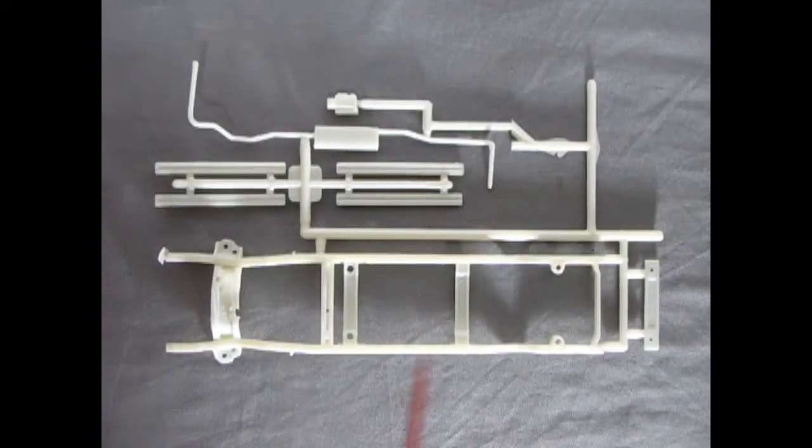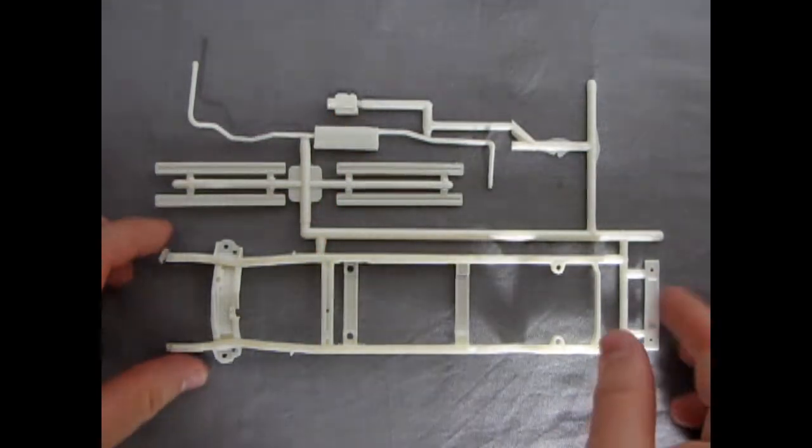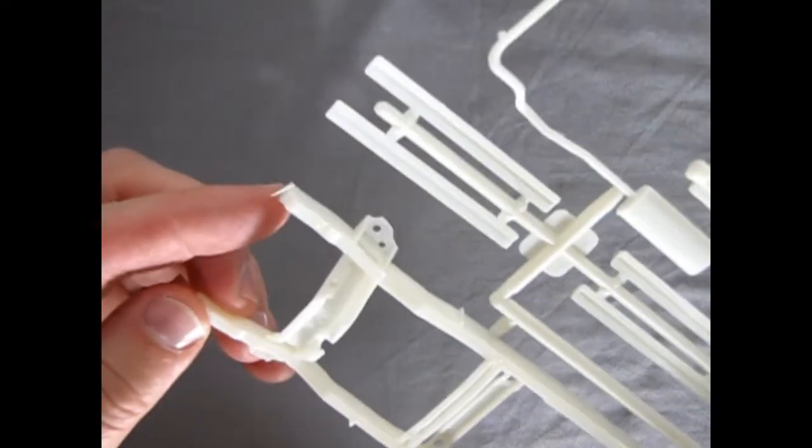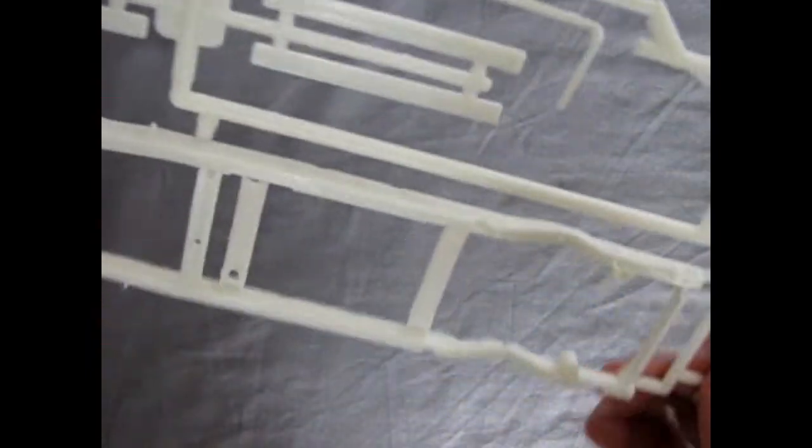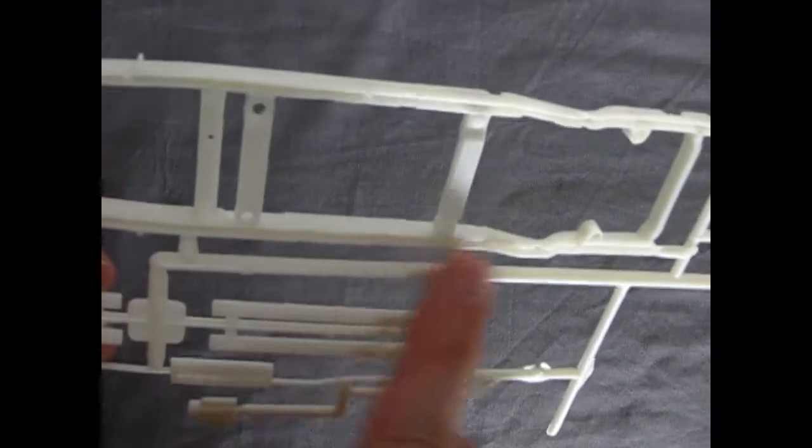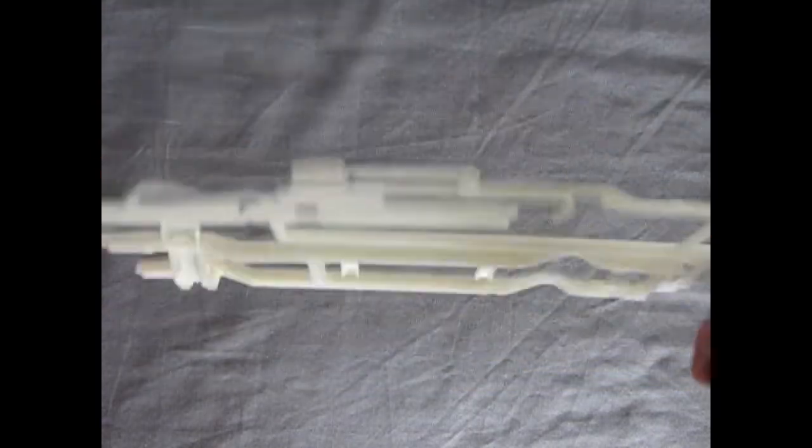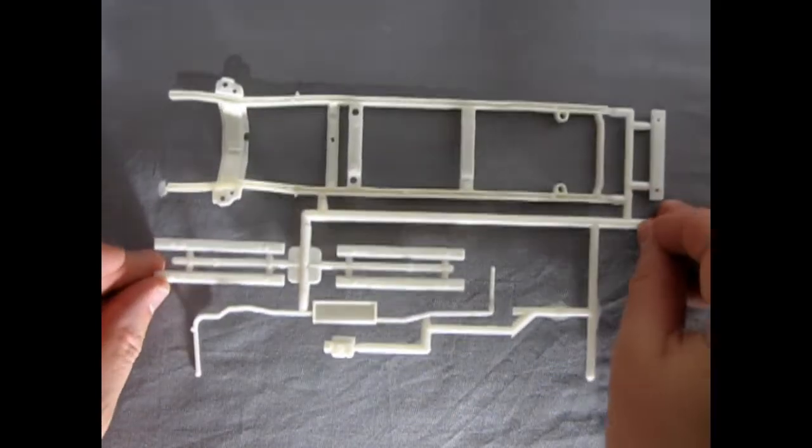Here we have the parts tree which includes our frame, our cross rails, our exhaust system and our brakes. So let's just take a look at this up in the camera. Again you can see there's quite a bit of flash on this which we'll have to take care of but overall this is not bad. Those mold marks are up on the top of the frame underneath so not even Danny crawling underneath would see them. So again very nicely done and very easy to clean up.